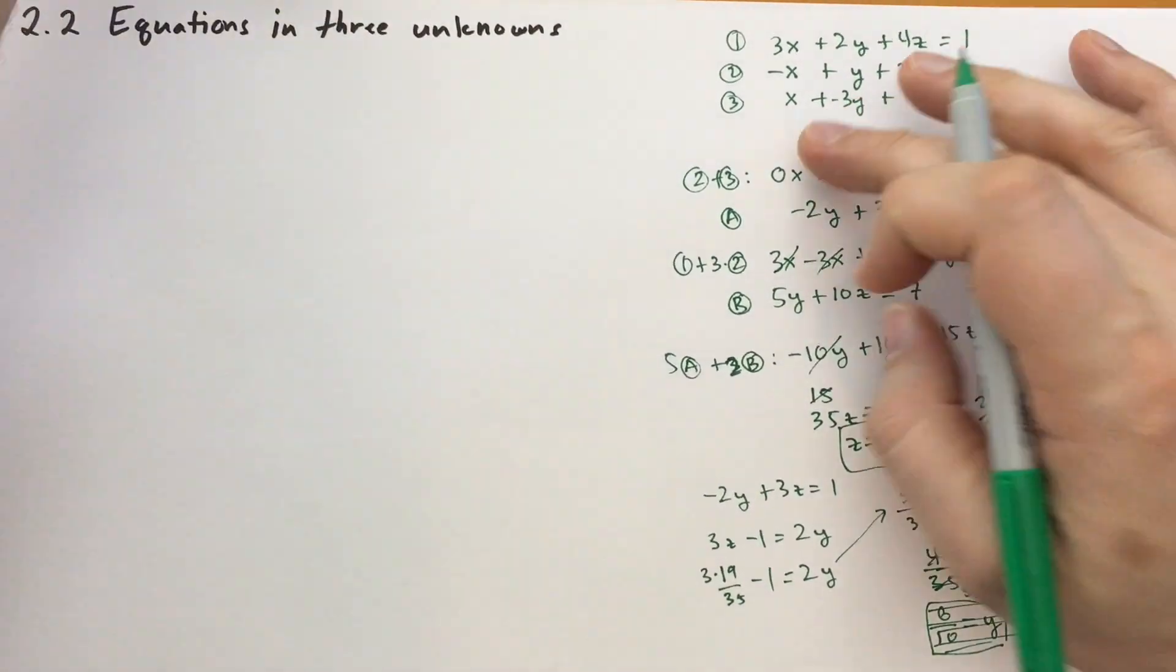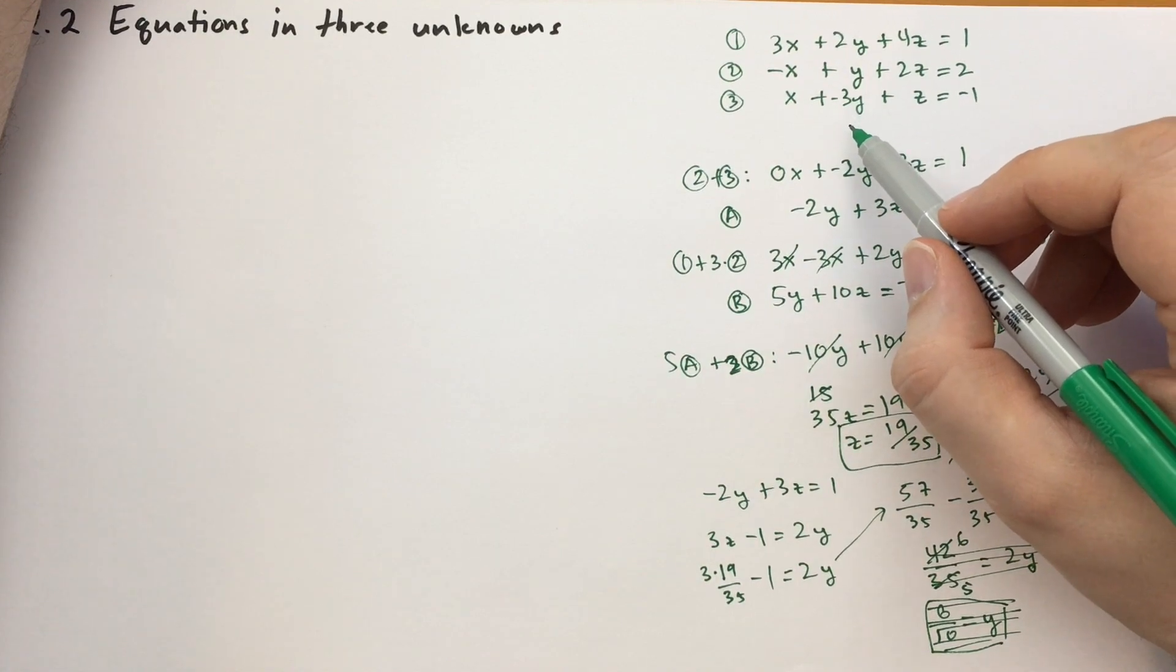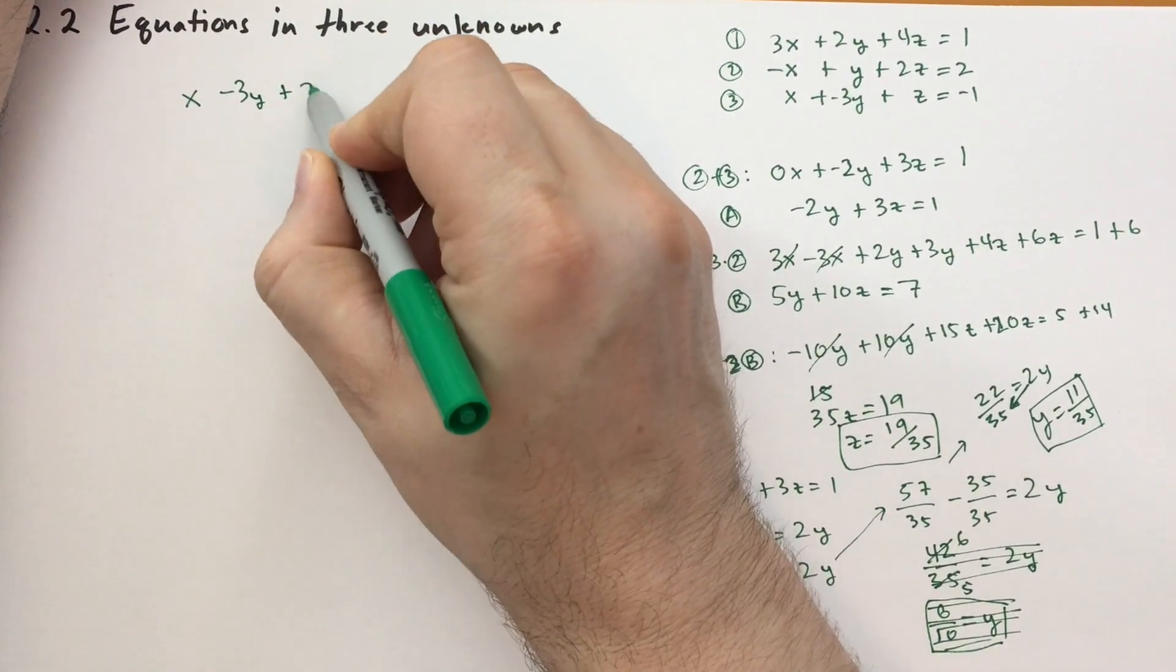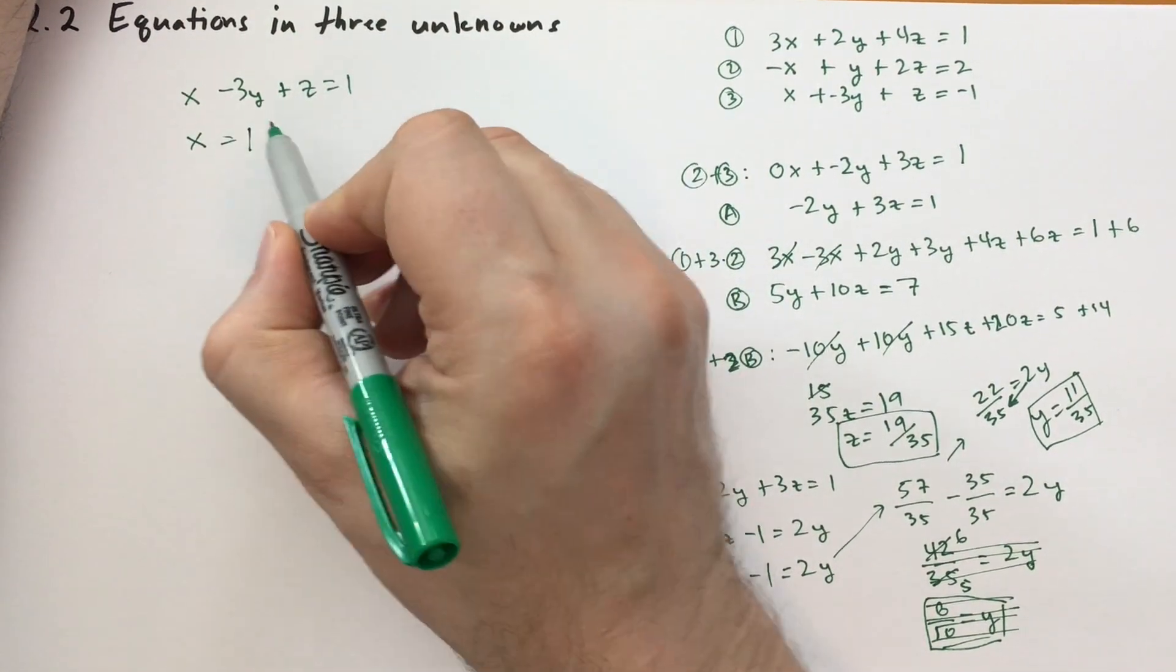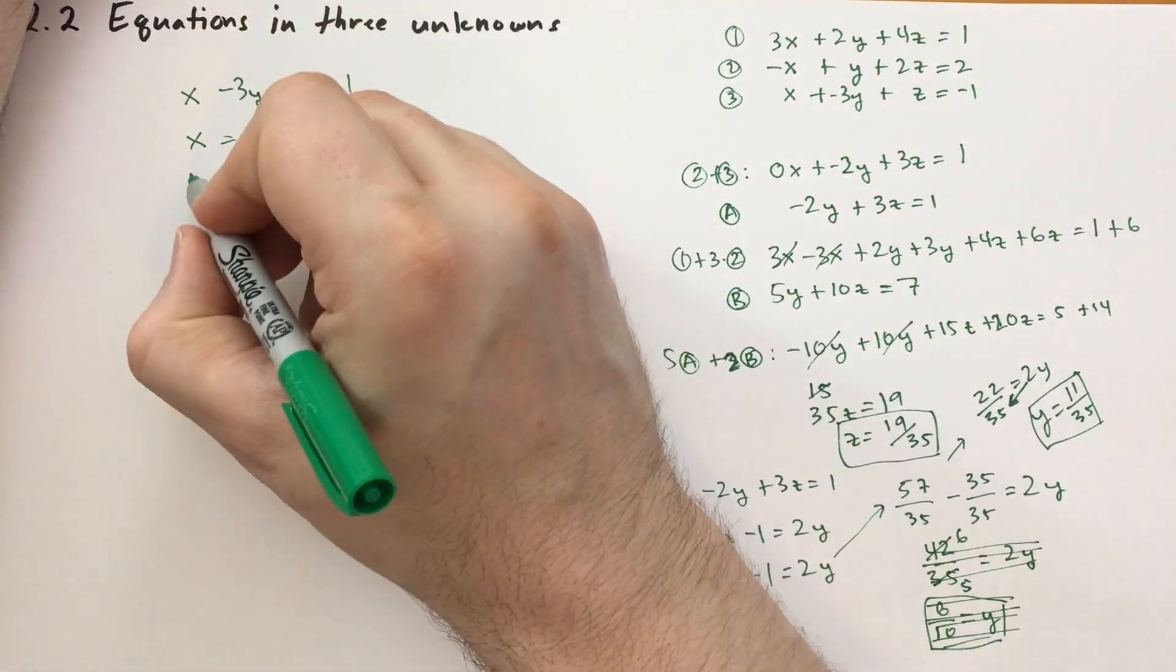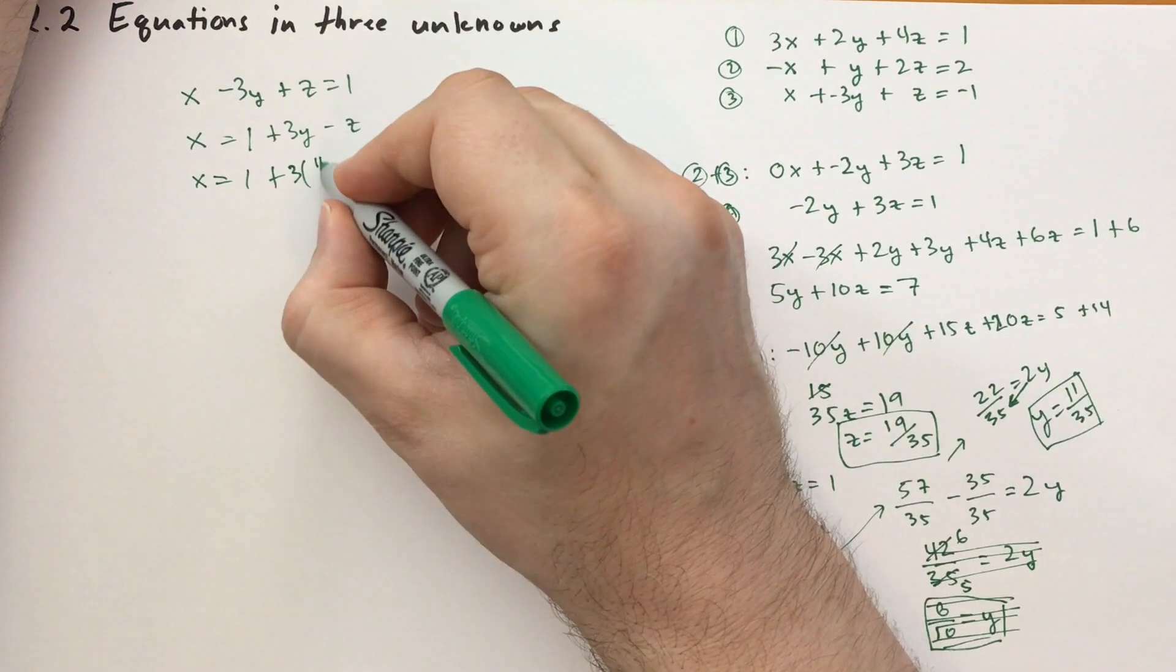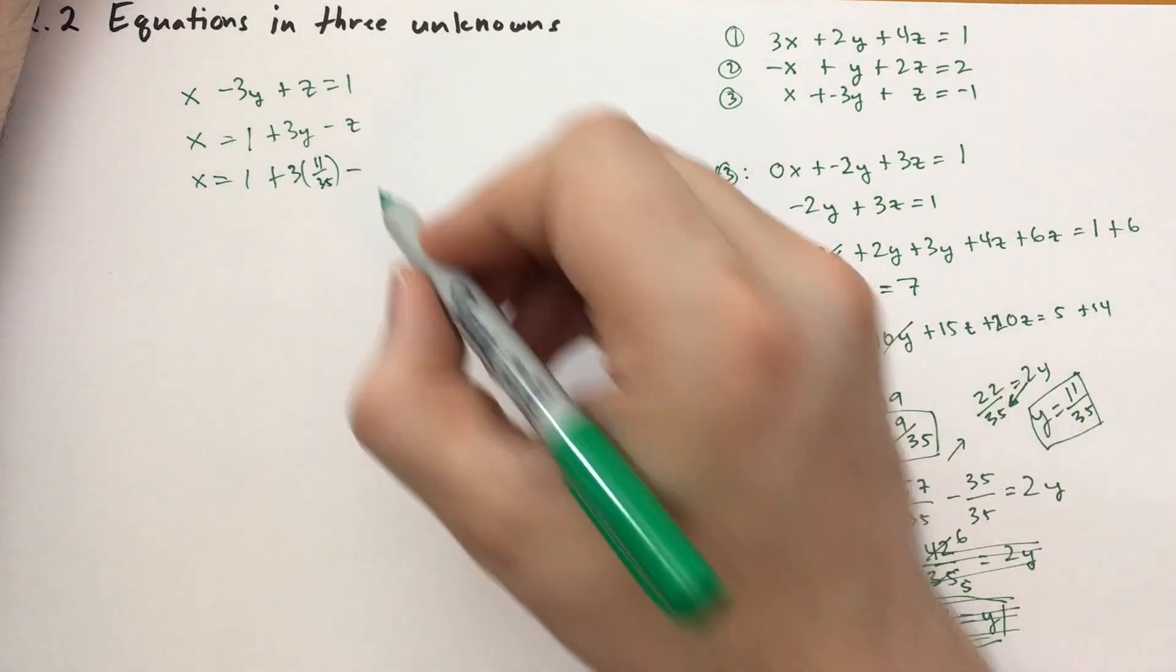Let's plug that into one of these original equations, and I think he wants to use this equation. Yeah. This third equation. So we get x minus 3y plus z is equal to negative 1. Let's move everything but the x to the right side. So this is going to be negative 1 plus 3y minus z. Remember that when you move terms across the equation, the equal sign, it flips sign. Okay. So x is equal to negative 1 plus 3 times y, which is 11 over 35, minus z, which is 19 over 35.